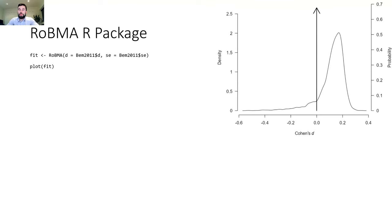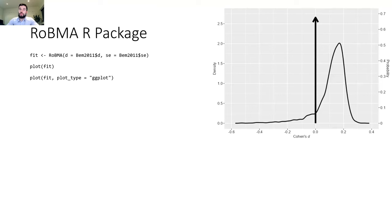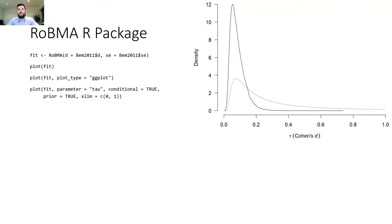The package also provides plotting functions. For example, you can plot the model average mean estimate, where the spikes correspond to the probability of models assuming absence of the effect (i.e., effect size is zero), and the slab corresponds to the density of models assuming presence of the effect. The functions are also compatible with ggplot. You can also look at the prior and posterior distributions — for example, for the tau estimate assuming presence of the effect — among many other combinations.